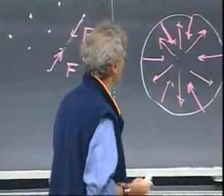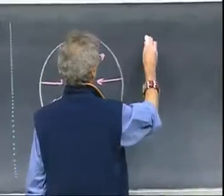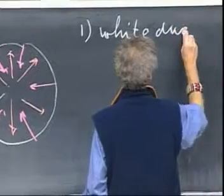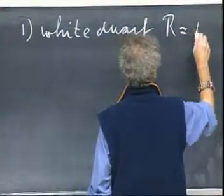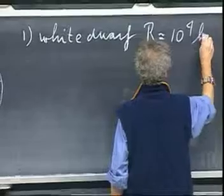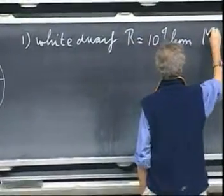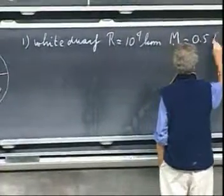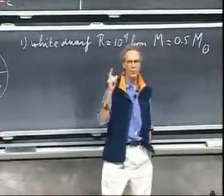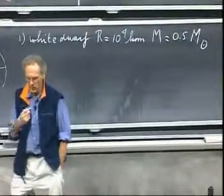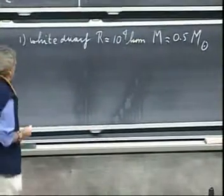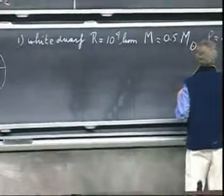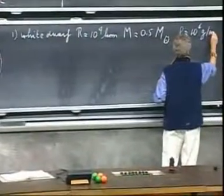And these three end products are the following. Number one, it's called a white dwarf. It has a radius approximately the same as the Earth, some ten thousand kilometers. And the mass of a white dwarf, there's a whole range of them, but a typical number, say, is half the mass of the sun. But that's one possible end product. This will be the fate of our sun, by the way. The density of such an object is quite high. The rho will be roughly ten to the six grams per cubic centimeter.